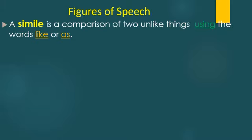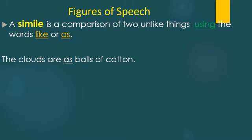Let's see how many figures of speech we have. The first one is a simile. A simile is a comparison of two unlike things using the words 'like' or 'as'. For example, the clouds are as balls of cotton — we have a comparison between two things using 'as'.